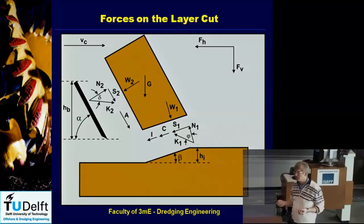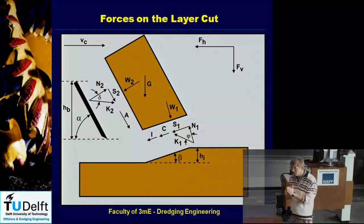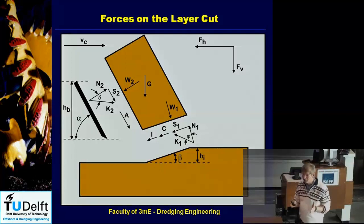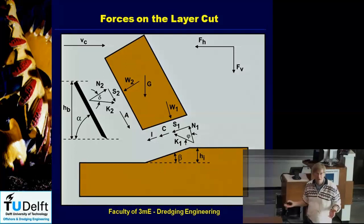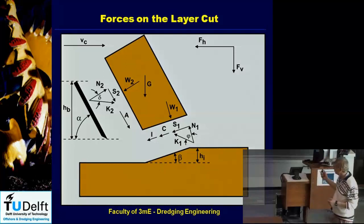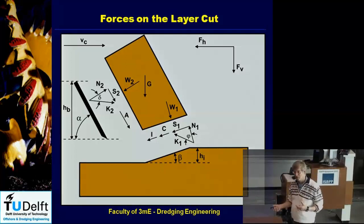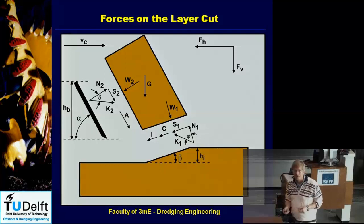If, theoretically, the adhesion would be bigger than the cohesion, even a small layer of clay would stick to the blade, and at maybe one millimeter from the blade, the clay would start failing internally. What you would measure on the blade is the cohesive force — the cohesion and not the adhesion. So in all the cutting tests people did in the past, they always assumed the maximum external friction is the internal friction, and the maximum adhesive strength is the cohesive strength.